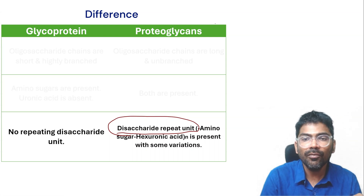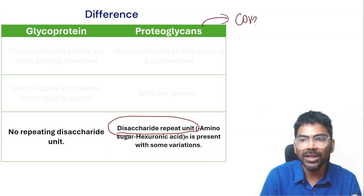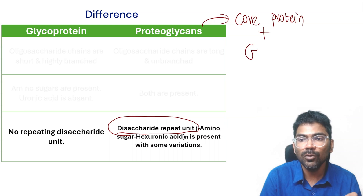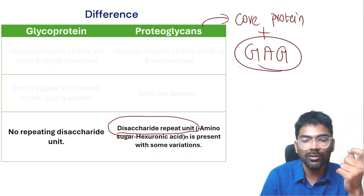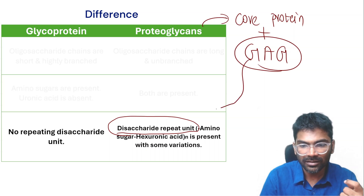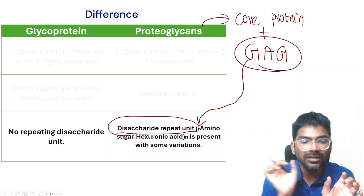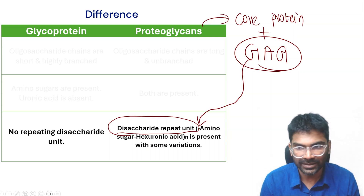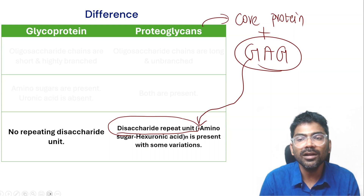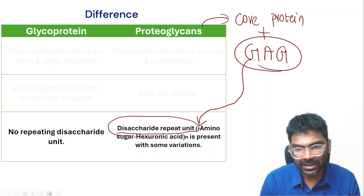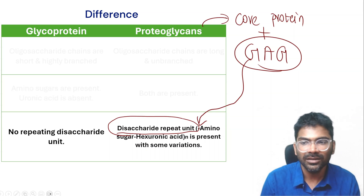Proteoglycans are made up of a core protein to which glycosaminoglycans are attached. Glycosaminoglycans are made up of amino sugar and hexuronic acid. There are many glycosaminoglycans: chondroitin sulfate, dermatan sulfate, heparin, and heparan sulfate.